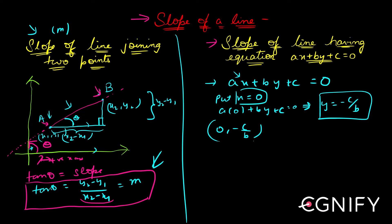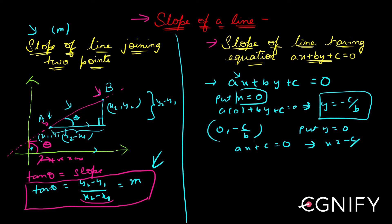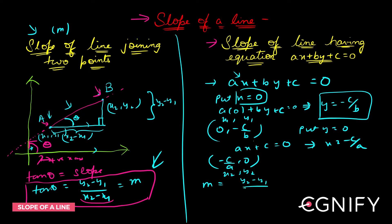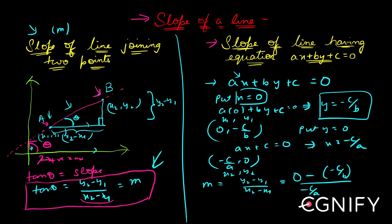Now put y = 0: ax + c = 0, so x = −c/a. The second point is (−c/a, 0). Let the first point be (x1, y1) = (0, −c/b) and the second be (x2, y2) = (−c/a, 0). Applying the slope formula: m = (y2 − y1)/(x2 − x1) = (0 − (−c/b)) / (−c/a − 0). When you solve this, you get m = −a/b.